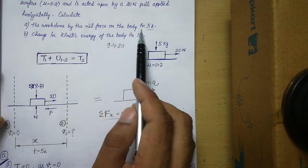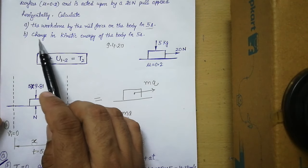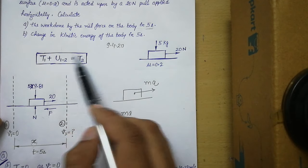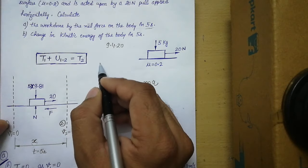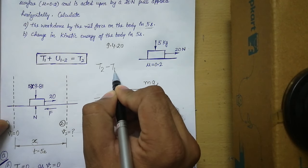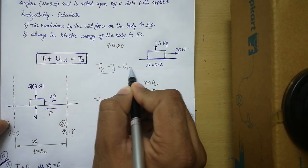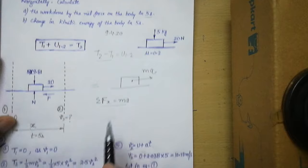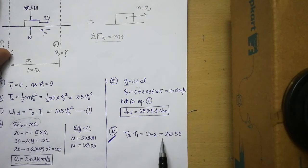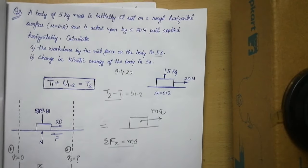For part B, we need the change in kinetic energy of the body in five seconds. Change in kinetic energy equals T₂ minus T₁, which is final kinetic energy minus initial kinetic energy. This is again equal to the work done, so the answer for part B remains the same as part A. I hope this numerical is clear to you. Thank you very much.